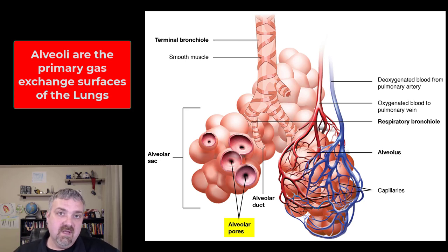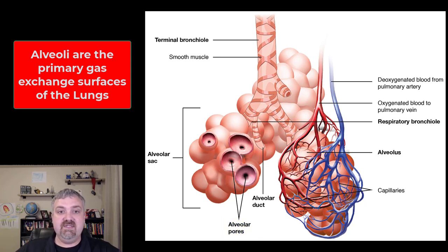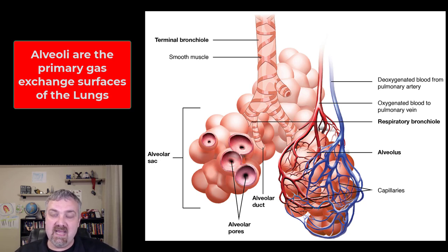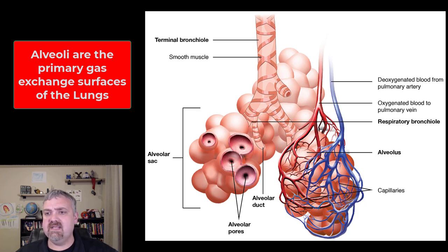The alveolar pore just makes sure that the pressure in the lungs is equalized across the lungs. You don't want one part of the lung to have more pressure than the other because that could lead to parts of the lung deflating or over-inflating. You also see the smooth muscle there, which is going to determine how much air enters and exits these individual airways. Just remember, the alveolus is the primary gas exchange surface of the lungs, but the respiratory bronchioles do trade a little bit of oxygen for carbon dioxide as well.